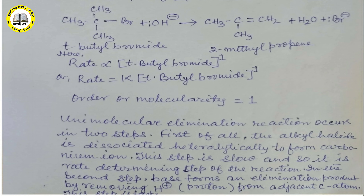Here (CH₃)₂C=CH₂ is the product, that is 2-methylpropene. We can say that जब tertiary butyl bromide की प्रतिक्रिया sodium hydroxide के जलीय घोल के साथ कराते हैं तो निराकरण प्रतिक्रिया होती है और 2-methylpropene प्राप्त होता है।